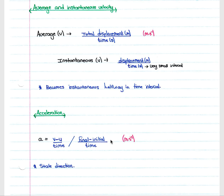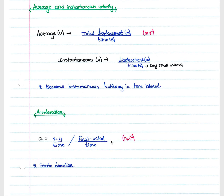Acceleration is calculated using final velocity minus initial velocity, divided by the time period for which you are examining the object. It is measured in meters per second squared, and you must always include the direction of your acceleration.